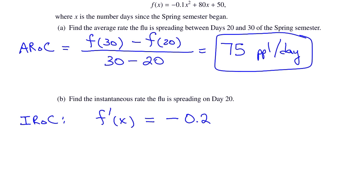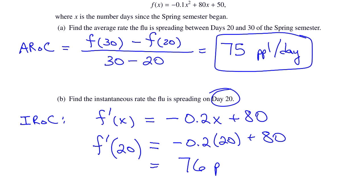That's negative 0.2x plus 80. And we're looking for it on day 20. So we evaluate the derivative at x equals 20, and we get 76 people per day.